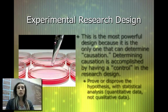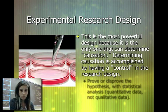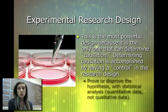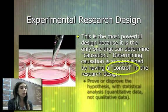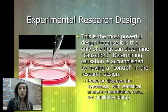The last type is experimental research design — this is the most powerful type of design because it can actually help us determine causation. The reason we can determine causation is because we have a control group, a group that doesn't get the manipulated variables, and we can compare to that control group.